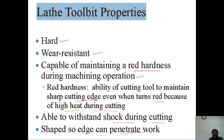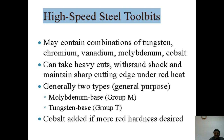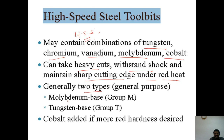High speed steel (HSS) tool bits contain tungsten, chromium, vanadium, molybdenum, and cobalt. About 90 percent of lathe machine single point cutting tools use high speed steel. HSS can withstand shock under red heat. Generally there are two types: molybdenum-base and tungsten-base. Cobalt is added when more red hardness is desired.